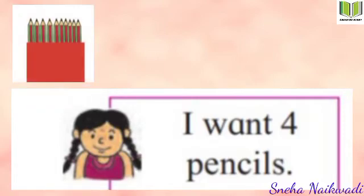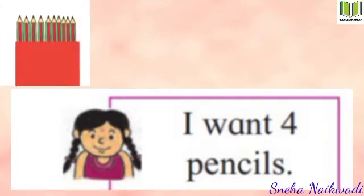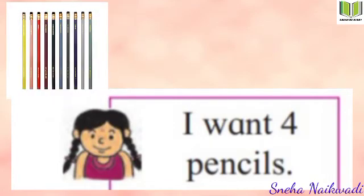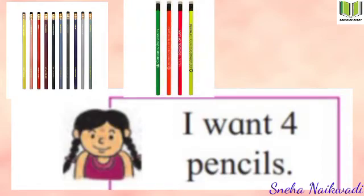Now the next one. The girl is saying she wants four pencils — four loose pencils. So what we will do is untie one bundle of 10 pencils, making them loose. From those loose 10 pencils, she can easily take four pencils. This way she will get her four pencils.